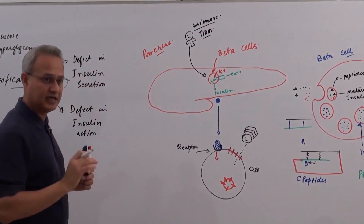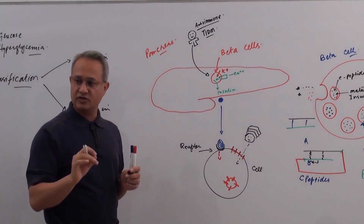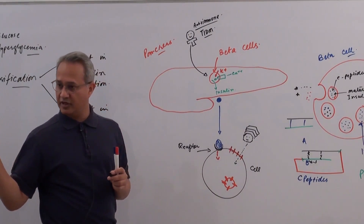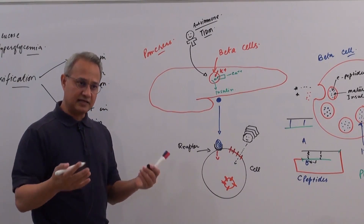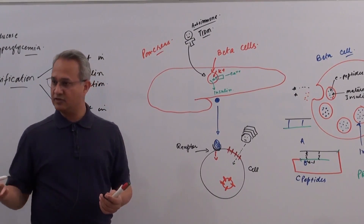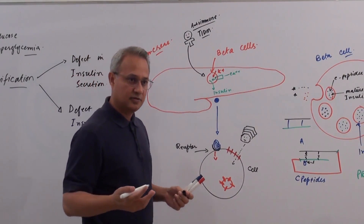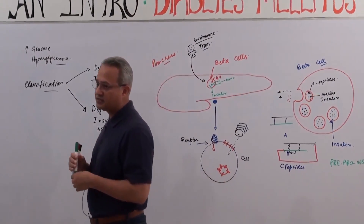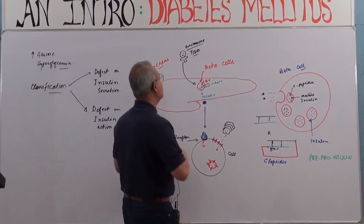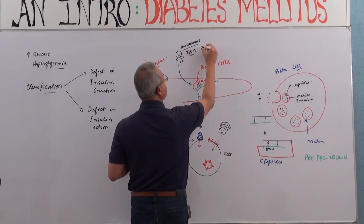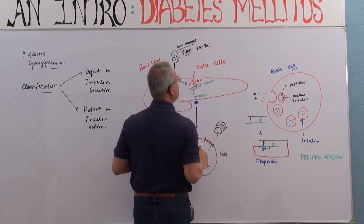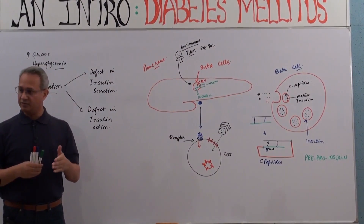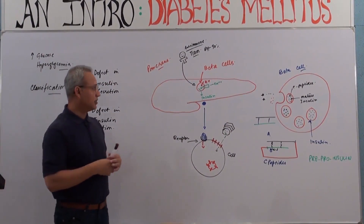We will discuss type 1 in detail, but for now: our immune system has started destroying the beta cells, and when a sufficient quantity of beta cells are destroyed, there is no insulin — that is type 1 diabetes mellitus. When we have 80% to 90% of beta cells gone, that is when we abruptly develop diabetes.